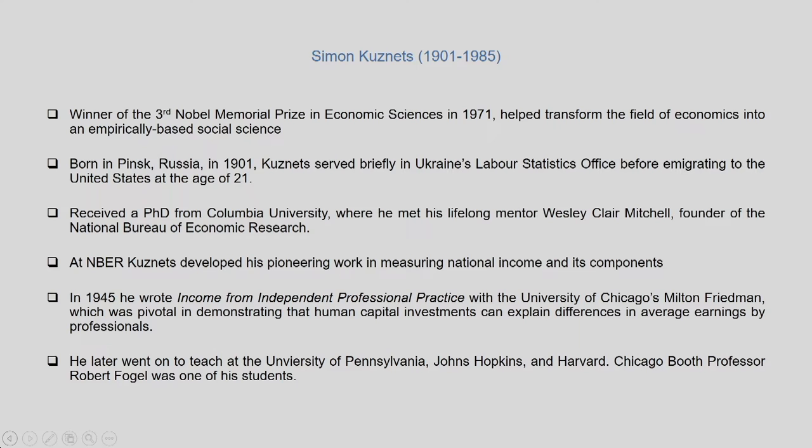Simon Kuznets was the recipient of the third Nobel Memorial Prize in Economic Sciences in 1971. He is credited with helping transform the field of economics into an empirically based social science. He was probably one of the first economists to work on long-term empirical data to draw conclusions based on historical evidence. Born in Russia in 1901, he briefly served in Ukraine's labor statistics office before migrating to the US at age 21.